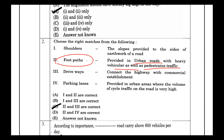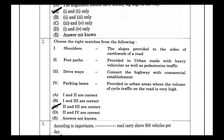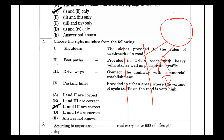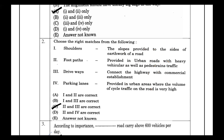Triways connect the highway with commercial establishments such as petrol pumps — that is the correct definition of a triway or driveway. The fourth option, parking lanes, are provided in urban areas where the volume of cycle traffic on the road is very high — that defines a cycle track.